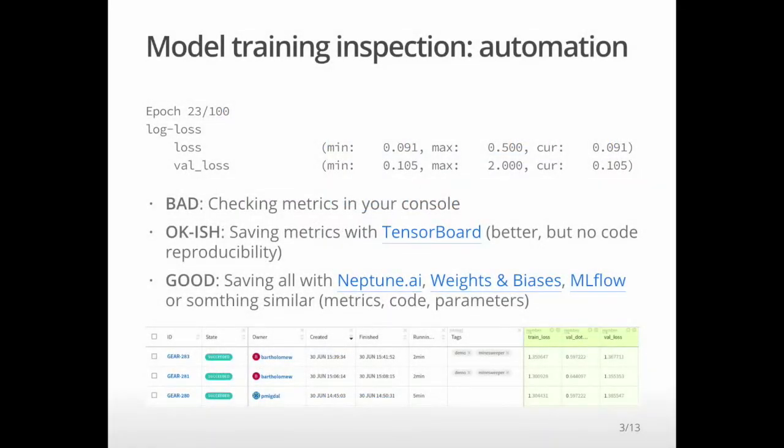Before I talk about investigating models interactively, let's make an overview of how to track our deep learning model training process. The simplest way is to use console and look at log loss, accuracy, etc. But I don't think it's a good solution. It's very easy to miss that it gets better or worse.